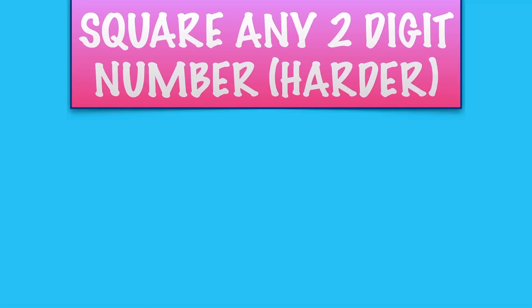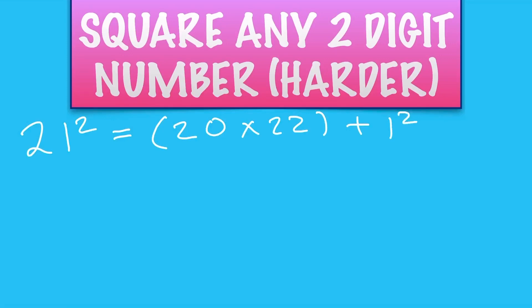This is a little bit harder because we're going to try and do this in our heads. I'll explain the method first. So let's say we've got 21 squared. Go down to the nearest 10, which is 20. I went down by 1, so I go up by 1, which is 22. Then add 1 squared. So 20 times 22: 10 times 22 is 220, double is 440, add the 1 squared is 441.